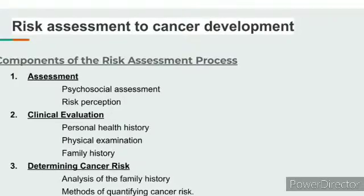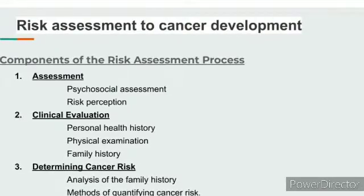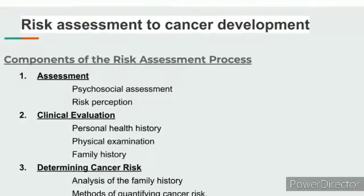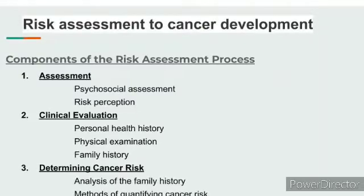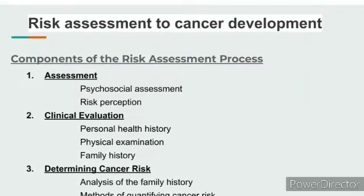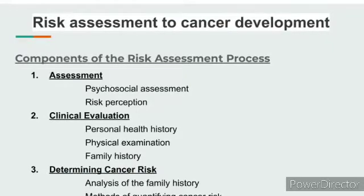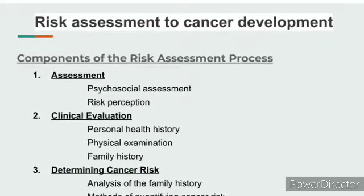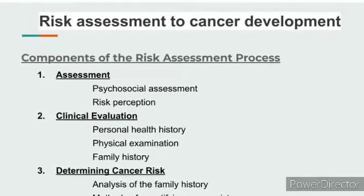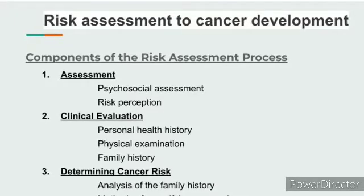Continuing the risk assessment for cancer development, we have the components of the risk assessment process. There are three points. First, psychosocial assessment of the patient: how is the patient's life, the family life, the patient's mental health, and risk perceptions about any kind of comorbidity the patient or the family may have. Second, clinical evaluation is the personal health history of the patient — whether they have any other underlying conditions or diseases, for example hypertension, diabetes, or autoimmune disease. The physical examination is also extremely important as it gives very detailed information about the patients.